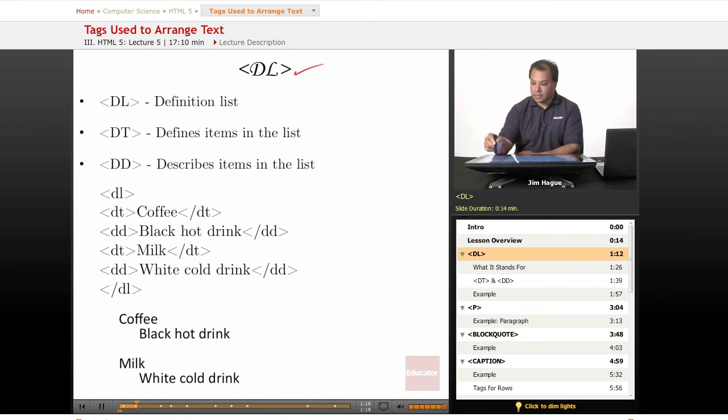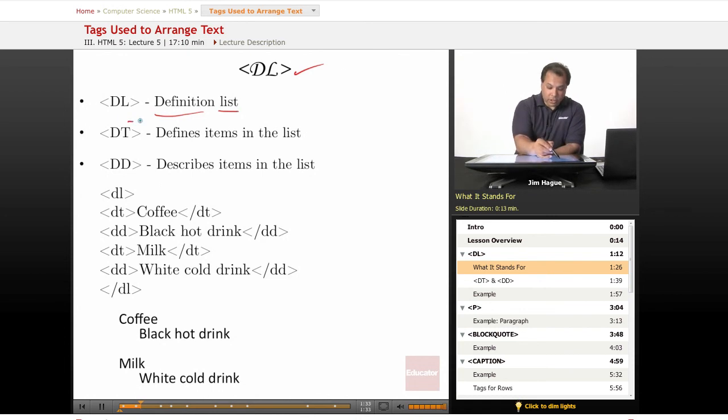It begins and ends with this tag. It has a couple of attributes we should discuss, but let's go over what DL stands for - it stands for definition list, pretty easy to remember. The DT attribute defines the items in a list, and the DD describes the items in the list.